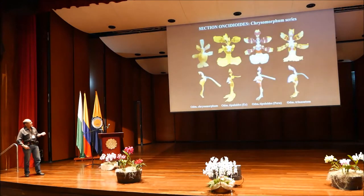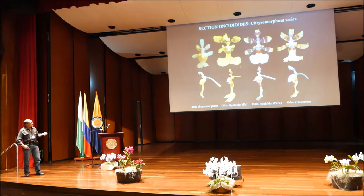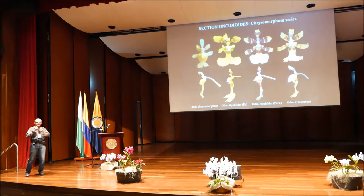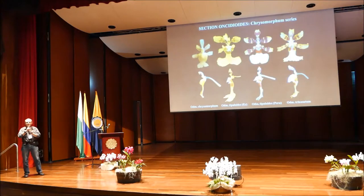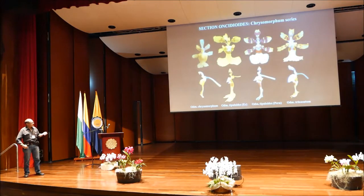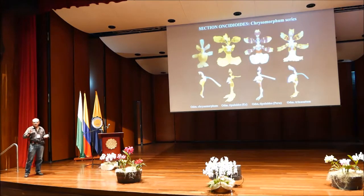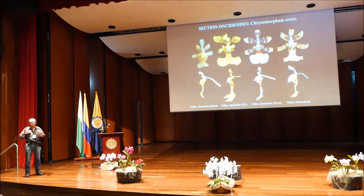The other series in Oncidioides don't have these column wings. Since they came out as separate clades, separate little branches in evolution, maybe you could describe them as separate genera using this feature. But I don't like that, because there are so many other features that unite them. The plants look identical, and most of the flowers look very similar.